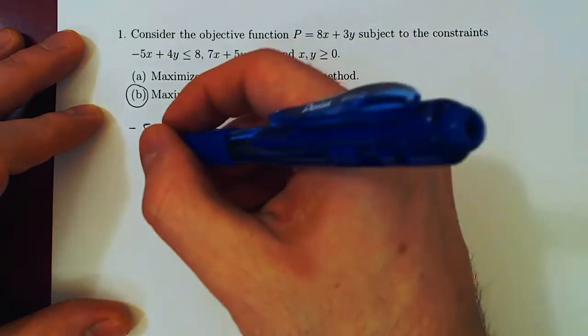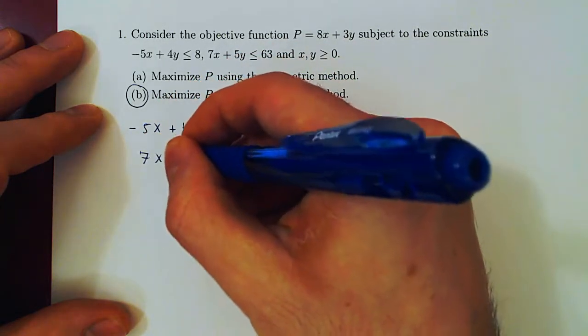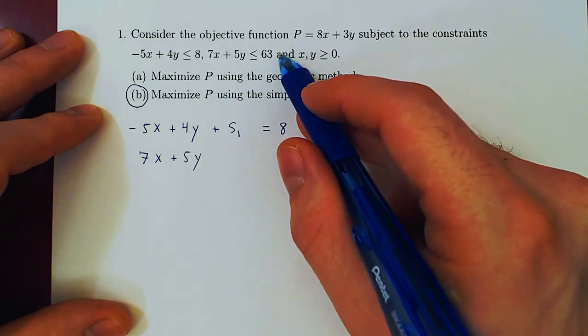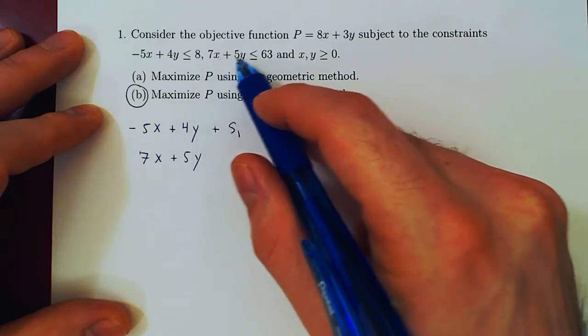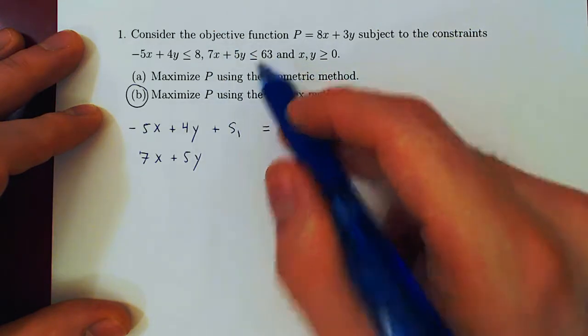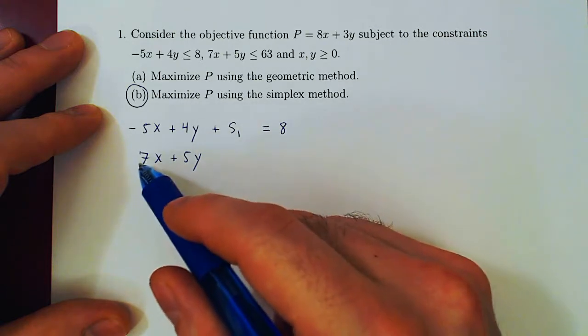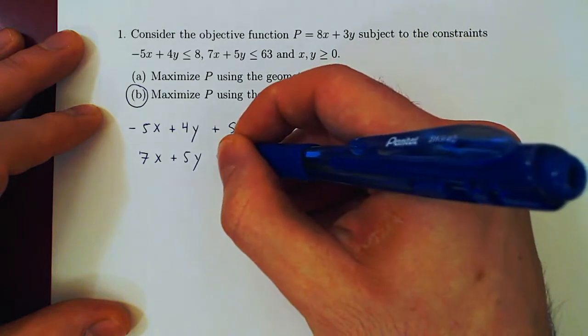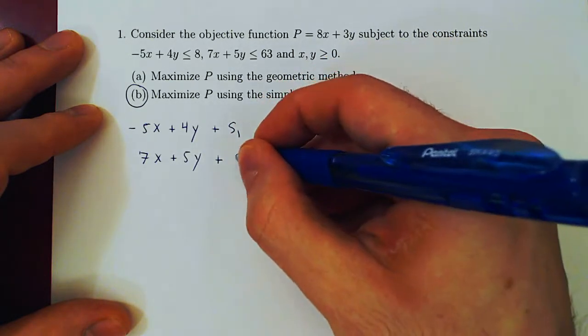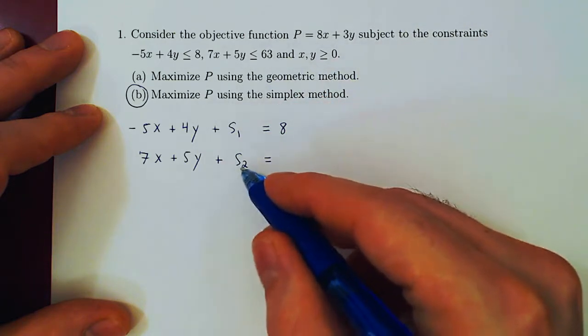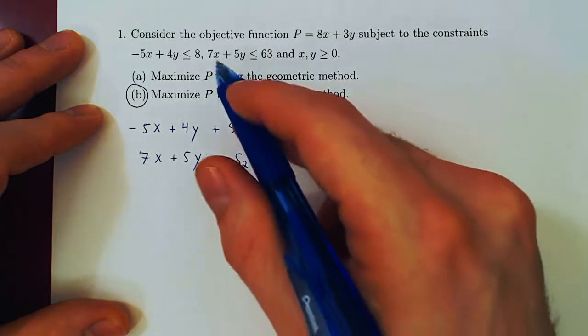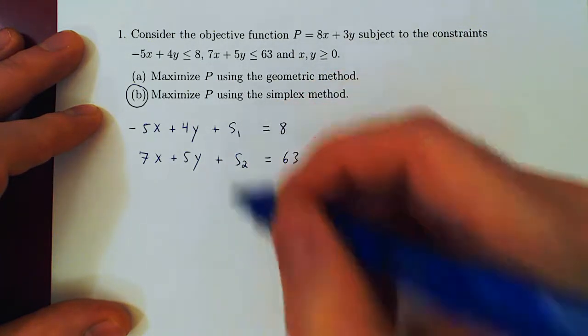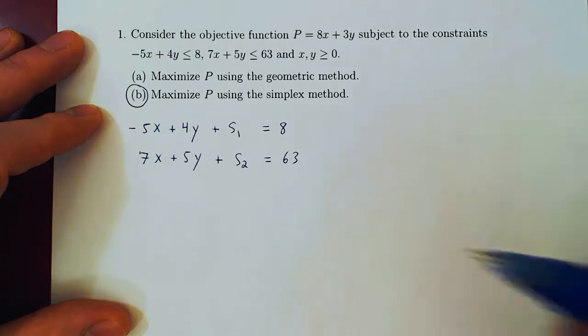Same for the second inequality. We have 7x plus 5y, and this is at most 63. If we add to the left-hand side just the right amount, we'll make this equal to 63. Of course, the amount that we have to add in this case may be different than the amount we have to add in the first case. So we need here another variable, call it S2. If we add just the right amount to 7x plus 5y, we'll be able to obtain exactly 63. Now we give these two variables special names. We call them slack variables.